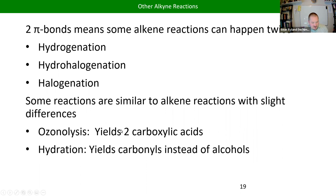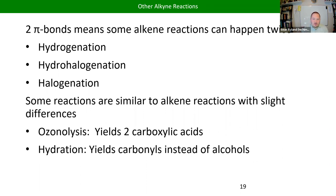Ozonolysis was the last thing we covered, and it works the same way. We're always going to be chopping up a molecule, but if we have three bonds we're replacing with oxygen bonds, instead of turning it into a carbonyl, we make the carboxylic acid. The general principle is the same: if you've got an alkyne and you put it through ozonolysis, find your triple bond, draw a line through it, and put a carboxylic acid group on each of those carbons.